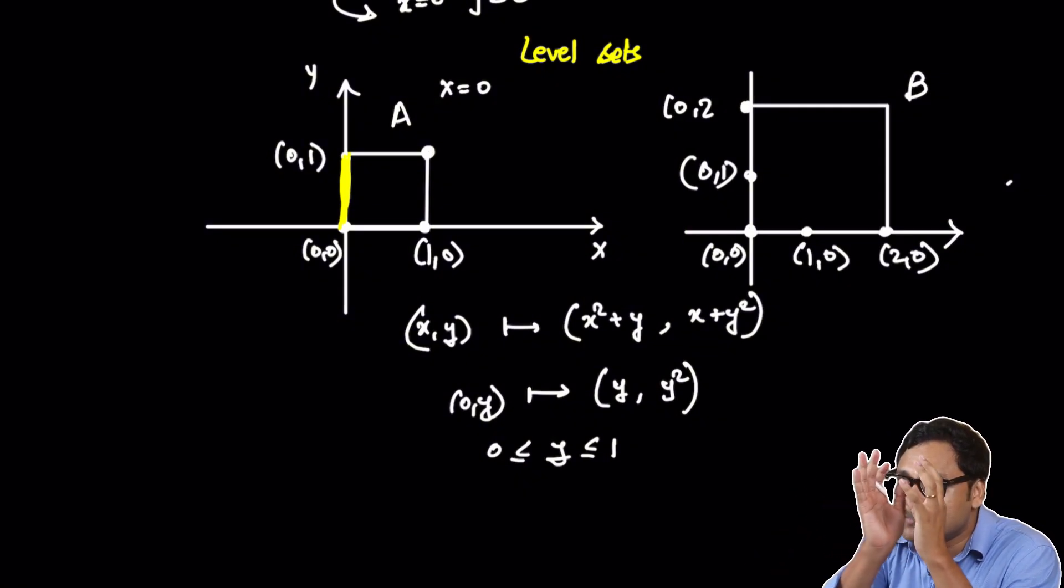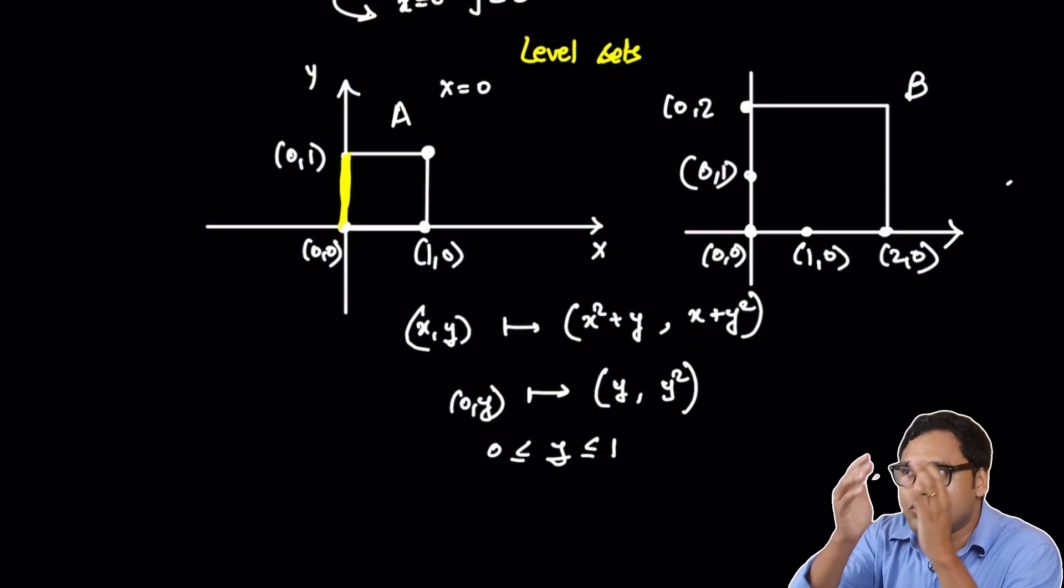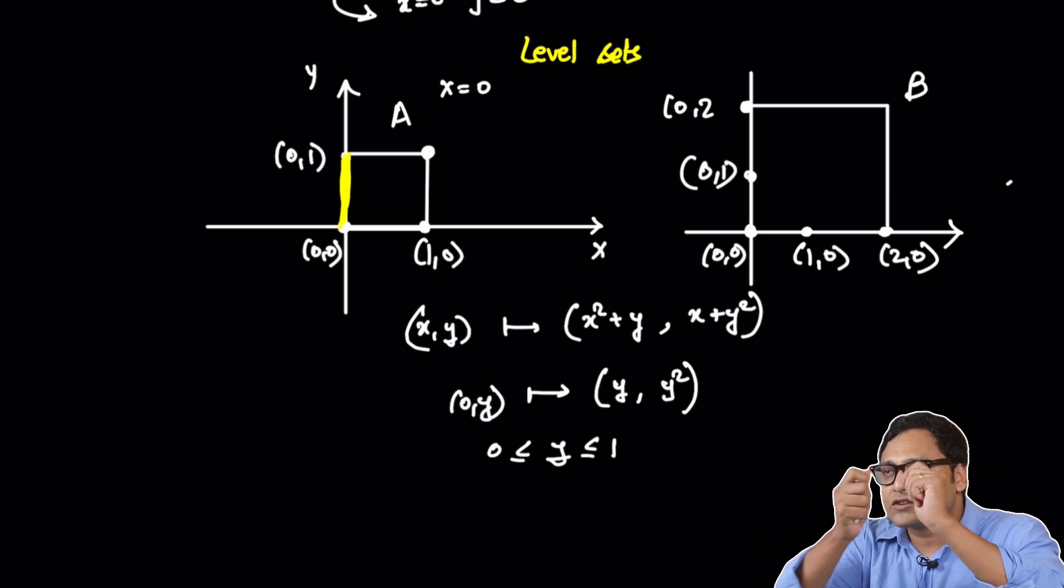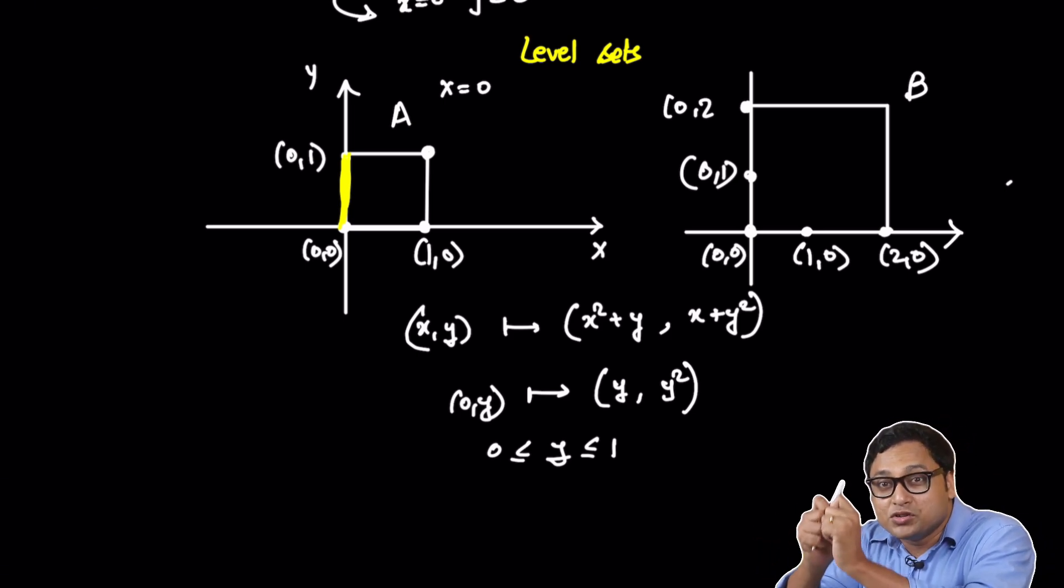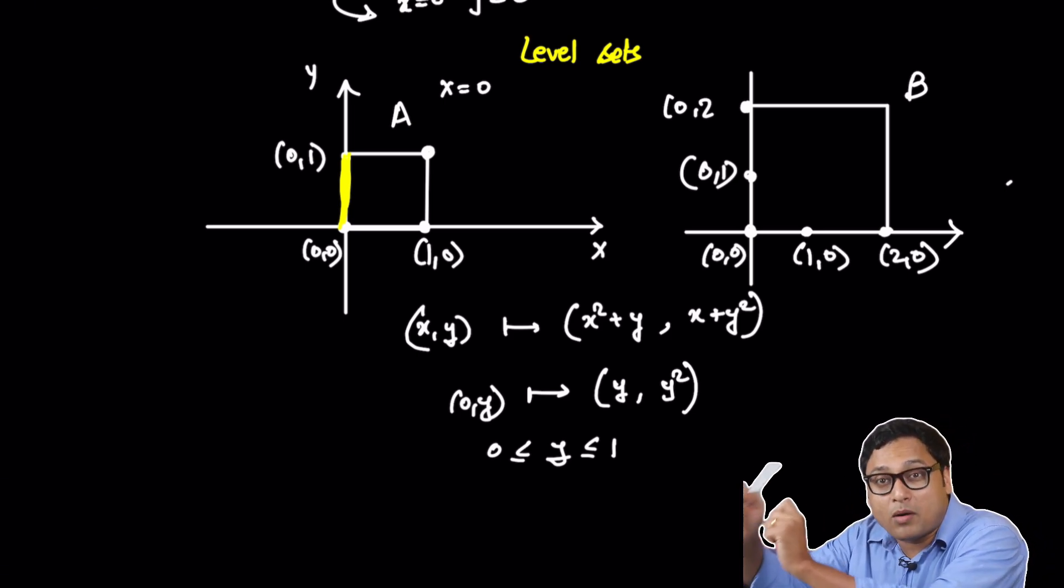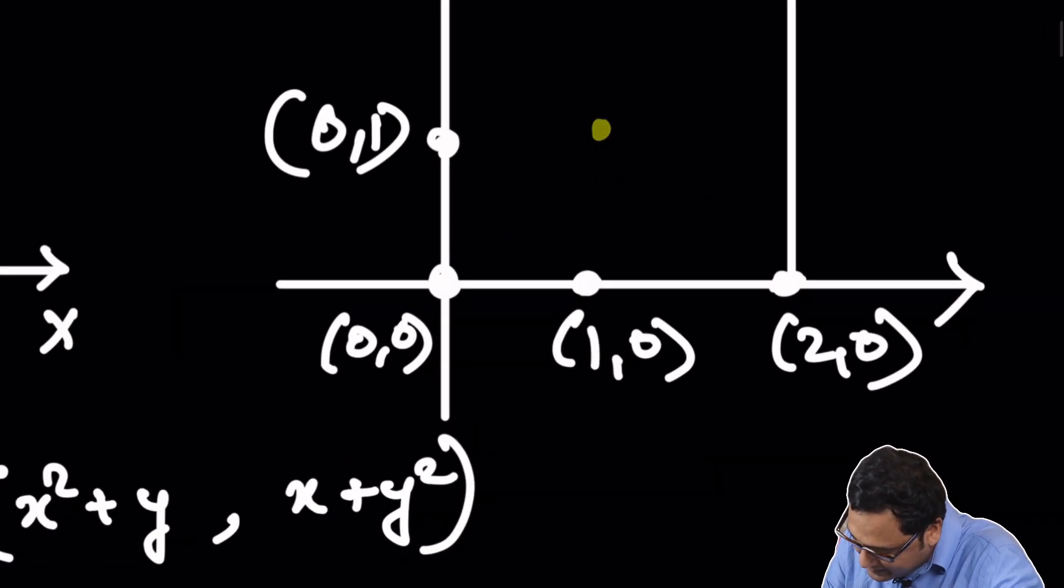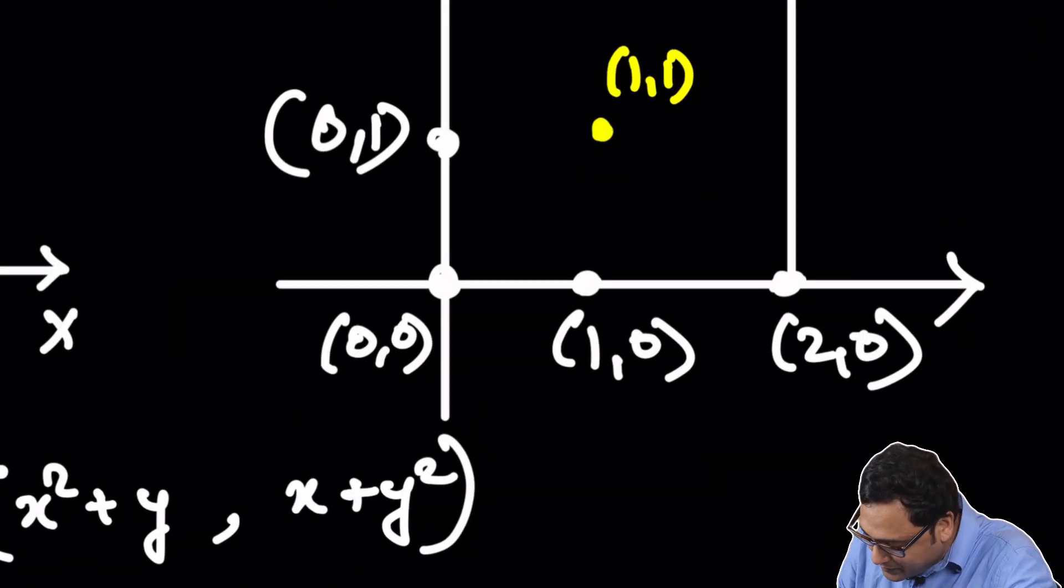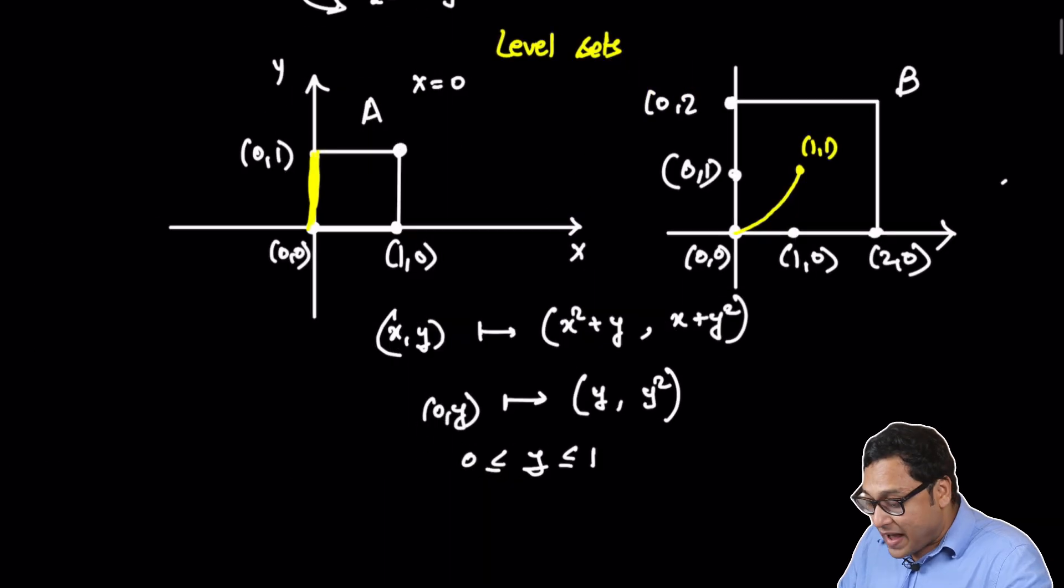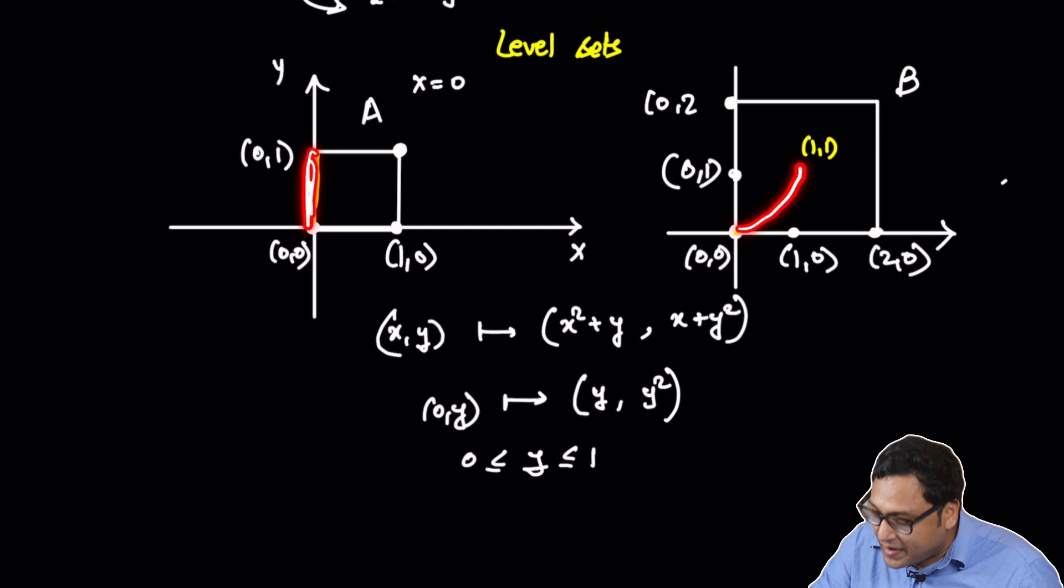So it's a parabola which is going from 0 comma 0 to 1 comma 1. As y goes from 0 to 1, y comma y squared goes from 0 comma 0 to 1 comma 1. So here is the picture. If I draw it carefully, this is 1 comma 1, and the picture is like this. It's a parabola. Just this particular piece is now mapped to a parabola.